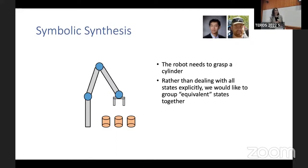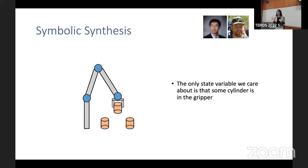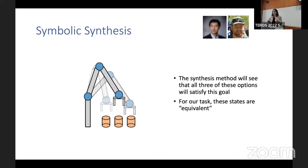And remember, I told you about representations at the beginning. I told you about abstractions and that we need to care about these things in our work. So let me give you an example to illustrate why symbolic synthesis and symbolic analysis makes sense for robotics. So here the robot needs to grasp a cylinder. We don't care which cylinder. More than just the cylinder. We can deal with all states explicitly. Well, that's fine. But if you have a thousand of these states, what do you do? However, we can group equivalent states together. So in this case, the only state variable that we care about is that some cylinder is in the gripper. That's it. I don't care about the rest.